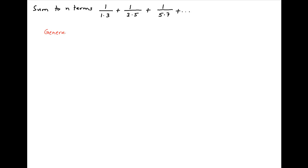The general term of the given series has two components in the denominator. The first component is the general term of the series 1, 3, 5 and so on, so the r-th term is equal to 2r minus 1. The second component in the denominator is the r-th term of the series 3, 5, 7 and so on, which is 2r plus 1.